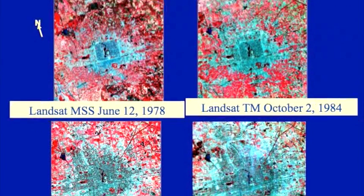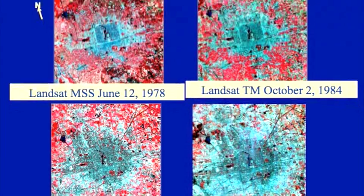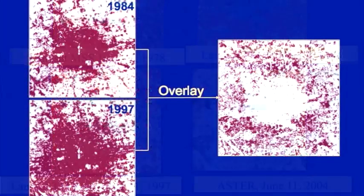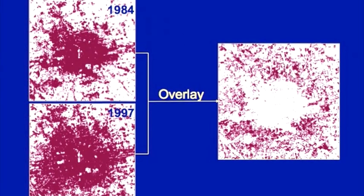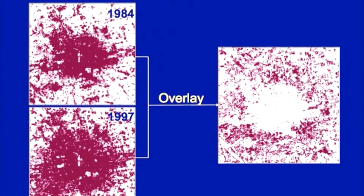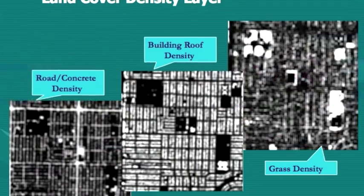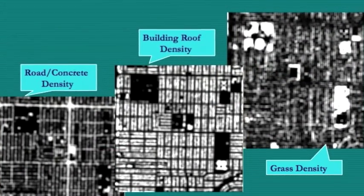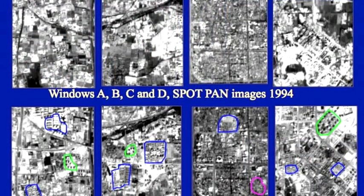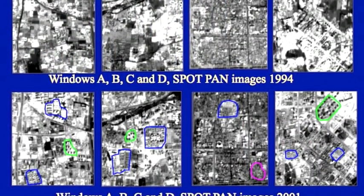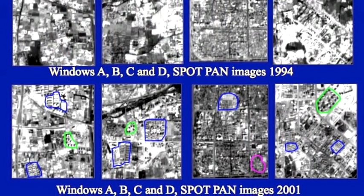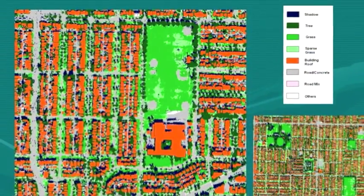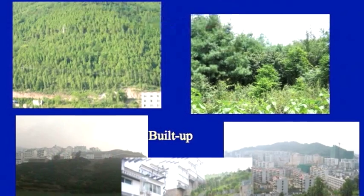One example is for change detection for urbanization — for example, urban expansion of Beijing, China. From the satellite image we can find the extension of the urban growth area. And then from different years of satellite images we can find different urban boundaries.